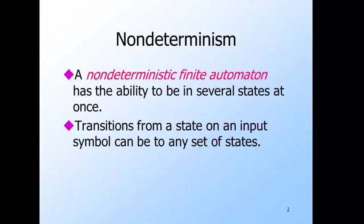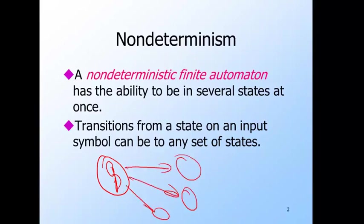A non-deterministic automaton has the ability to be in several states at once. A transition in a non-deterministic automaton is from some state, say Q, on an input, say A, and it can go to several different states. So we can have several transitions all labeled A. This is the thing that allows the automaton to, in a sense, guess — to be non-deterministic. It can go from state Q to really any of these states, and therefore it actually goes to all of those states at once.